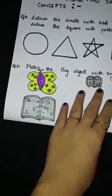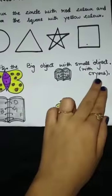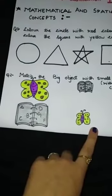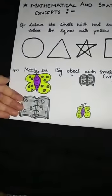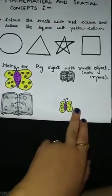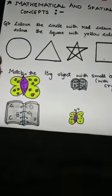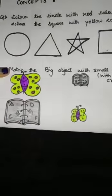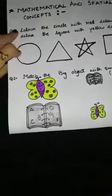Question two is: match the big object with the small object using crayons, not with pencil. I have drawn two images here — first is a butterfly and second is a book. Same here also — first is a book and second is a butterfly. You have to match the big object with the small object, and the big book with the small book, using crayons. This is the second question.